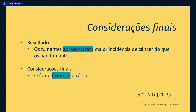Quando falamos sobre os resultados, descrevemos o que observamos. Nas considerações finais, trazemos a conclusão. Na primeira há uma interpretação de observação; na segunda, uma ideia de conclusão. Os resultados no passado; as conclusões no presente. É uma diferenciação importante para não confundir os dois capítulos.